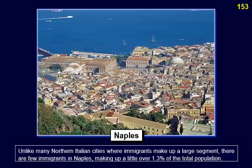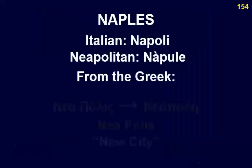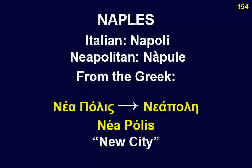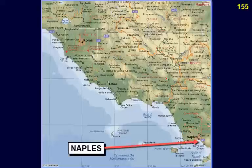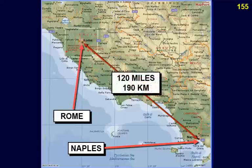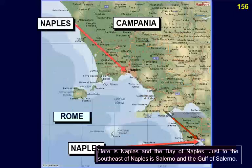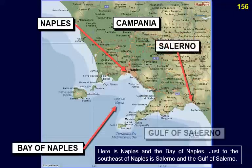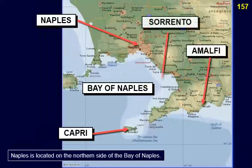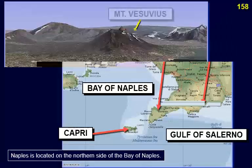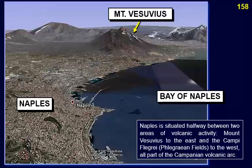Unlike many northern Italian cities, there are few immigrants in Naples, making up just over 1.3% of the total population. The name of Naples in Italian is Napoli, which came from its Greek name Neapolis, meaning 'new city.' Naples is situated halfway between two areas of volcanic activity: Mount Vesuvius to the east and the Campi Flegrei to the west, all part of the Campanian volcanic arc.